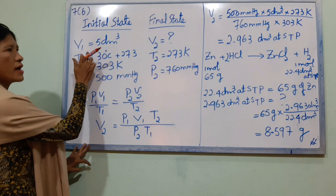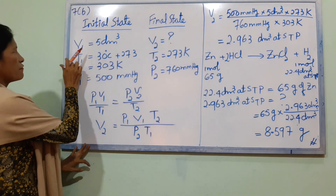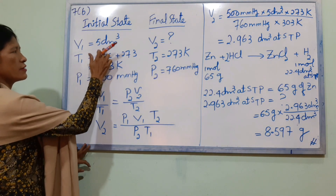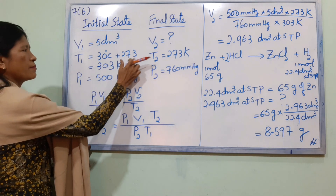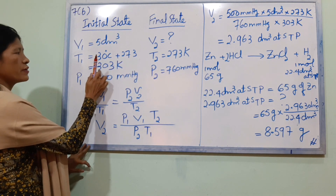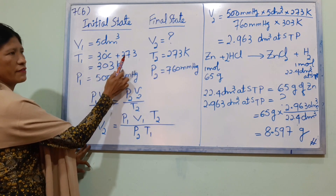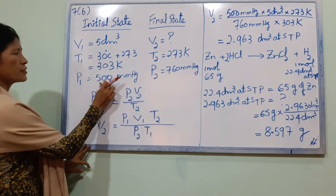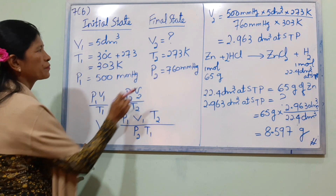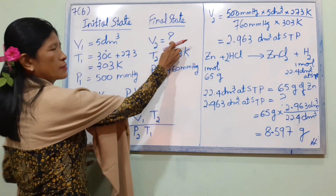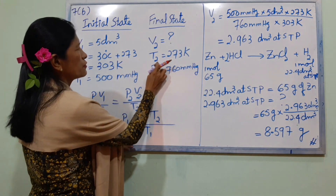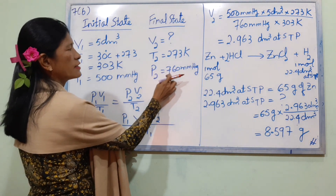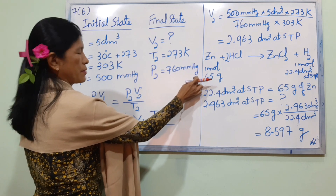Initial state: V1 = 5 dm³, T1 = 30°C, which is 303 Kelvin, P1 = 500 mmHg. Final state: V2 = question mark, T2 = 273 Kelvin, P2 = 760 mmHg.